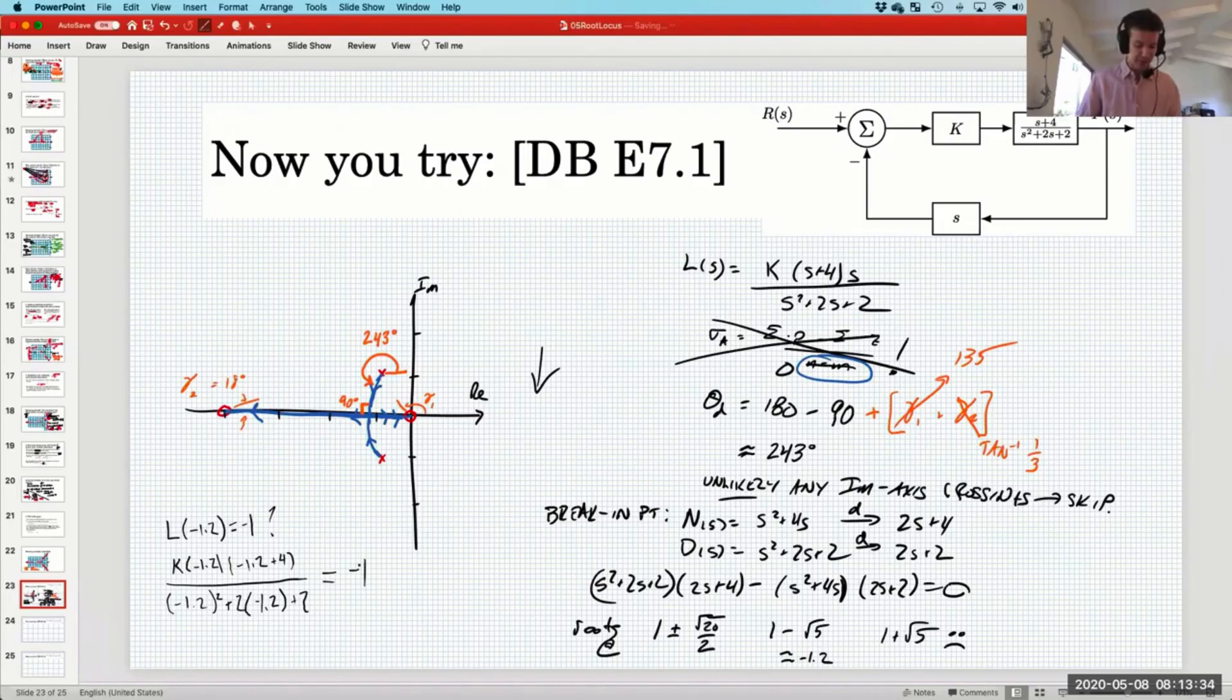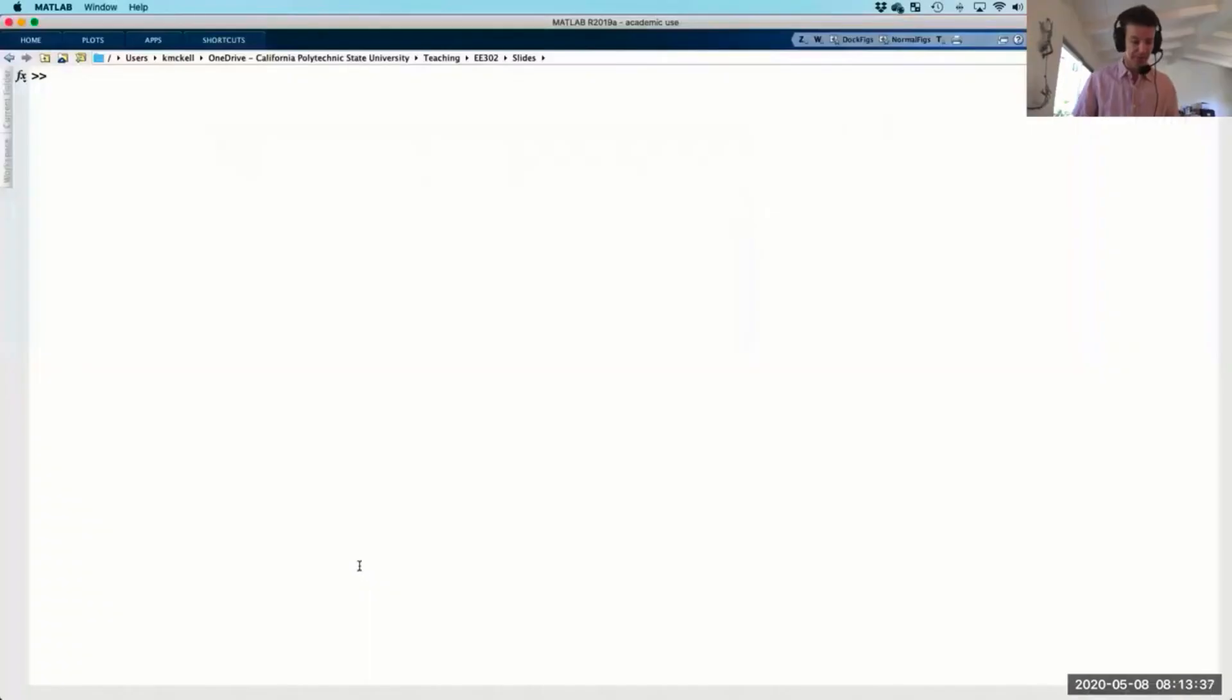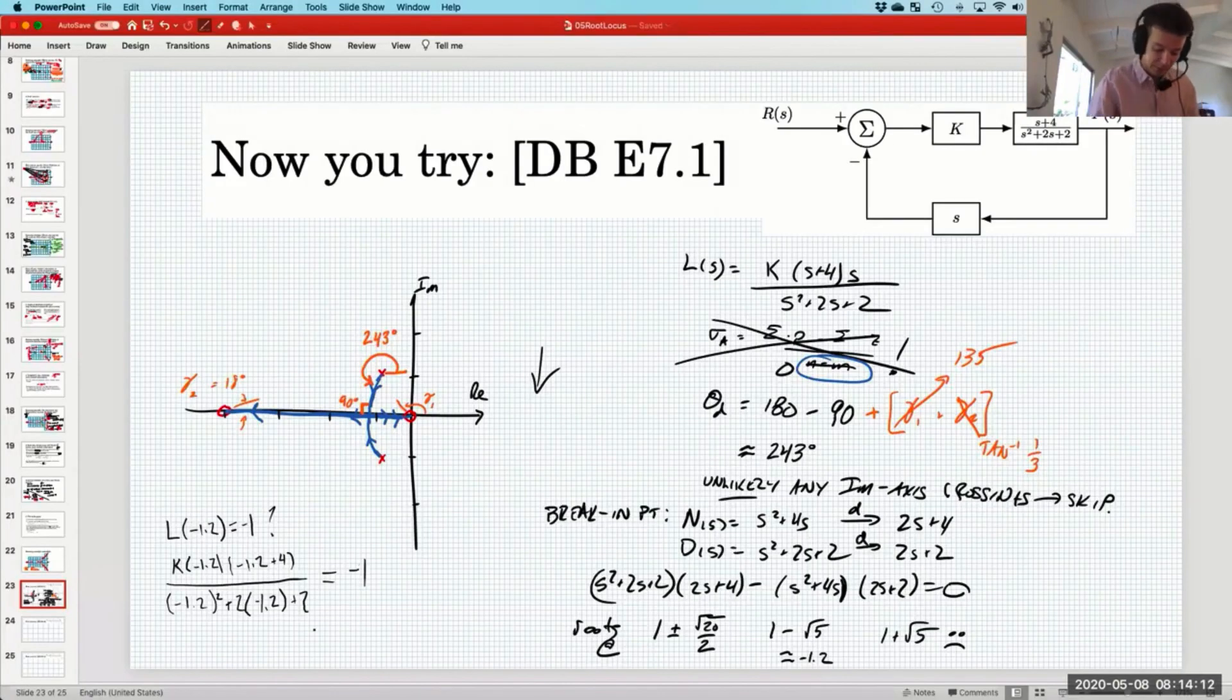There's the zero at the origin, there is the zero at negative 4, and then there's the complex conjugate poles: s squared plus 2 times s plus 2. We're going to solve that when it equals negative 1. This is mildly hairy so I'm going to bring up my favorite calculator. The critical value of k here is about 0.31.